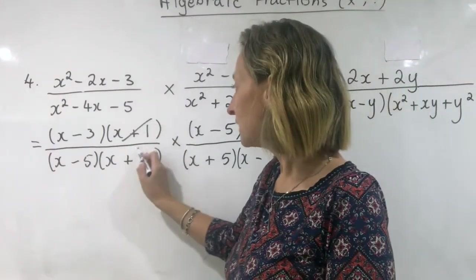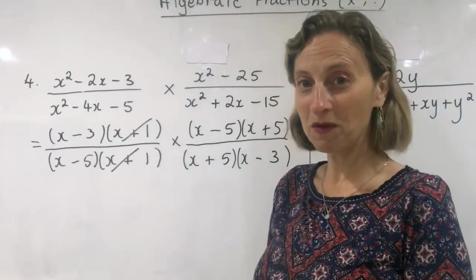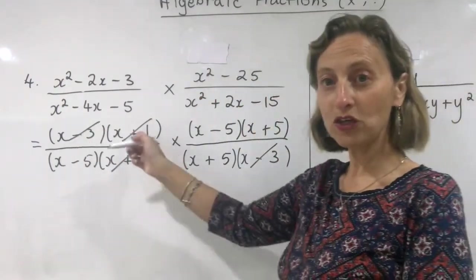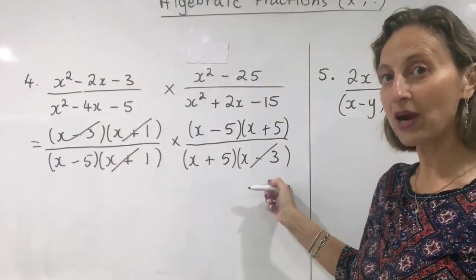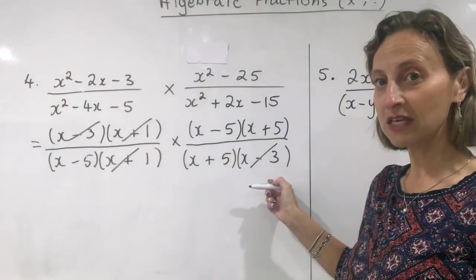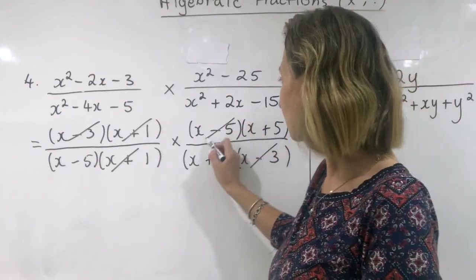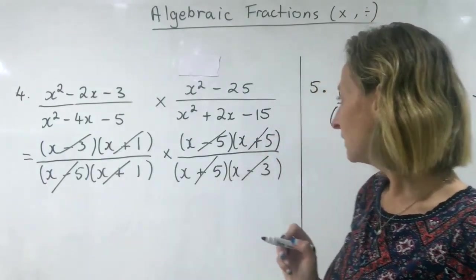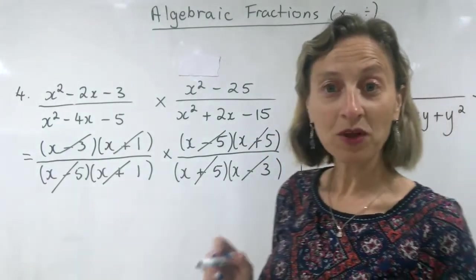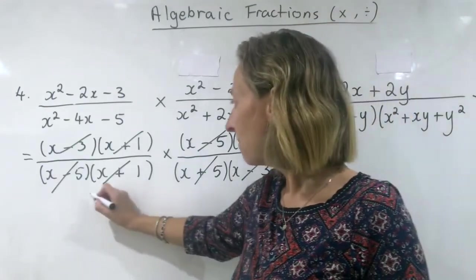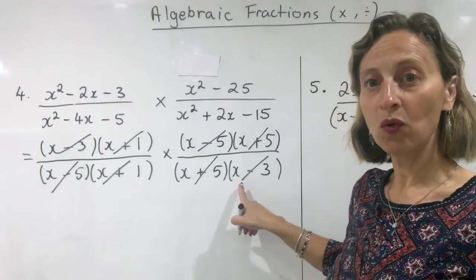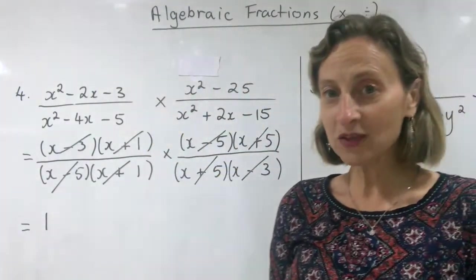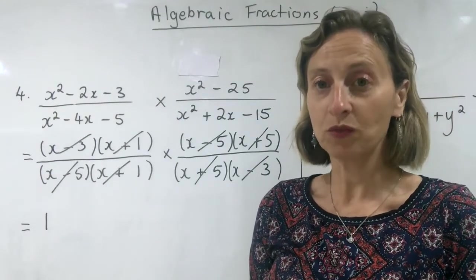I can cancel those ones — very tempting to do before. I have an x minus three on the top left and one on the bottom right — we're allowed to do that as long as everything's multiplied. And I even have an x minus five and an x minus five to cancel as well. Interestingly, I'm left with nothing on the left and nothing on the right, so that makes each fraction one, and one times one is one. When everything cancels, remember you're not left with zero — you're left with one.